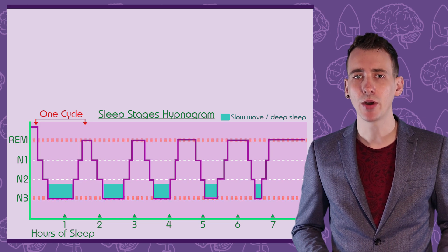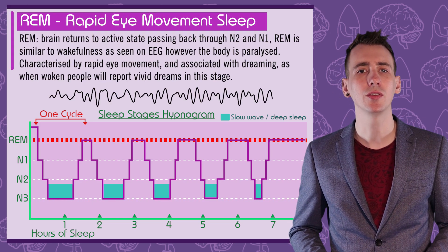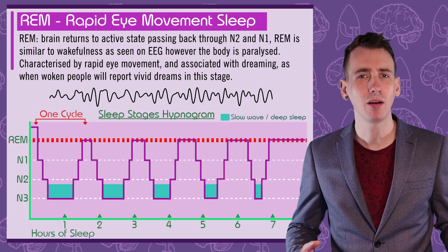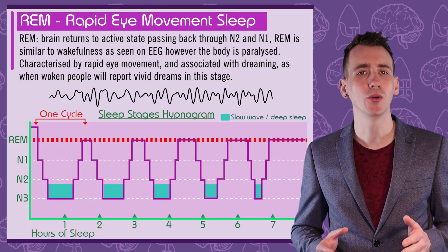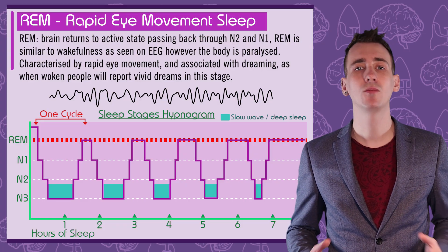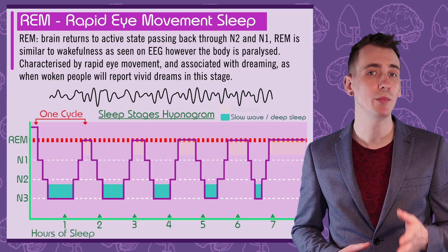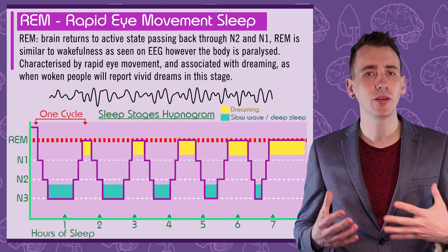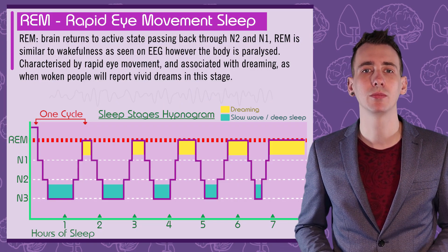In REM sleep your brain returns to an active state similar to wakefulness, as seen on the EEG, but the body is paralysed. Because of this, REM sleep is also known as paradoxical sleep. Physically, REM sleep is characterised by rapid eye movement, giving REM its name. REM is associated with dreaming — if you wake someone in this stage of sleep they'll describe vivid dreams.